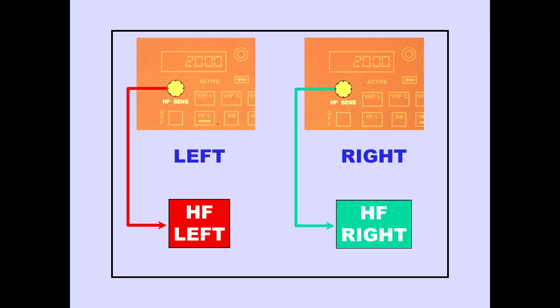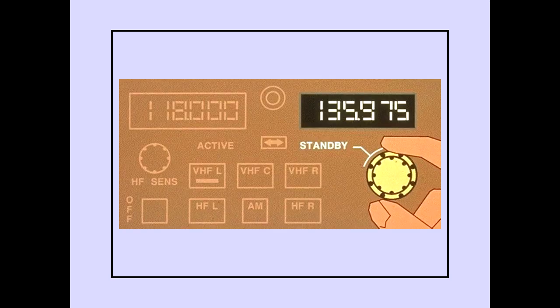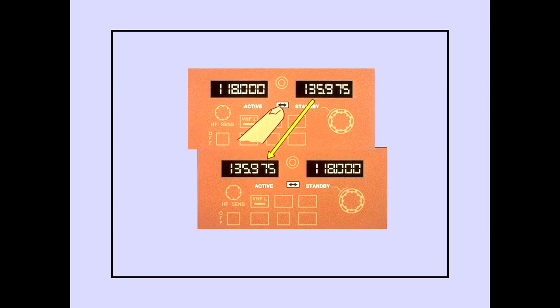The center radio tuning panel HF sensitivity control is inoperative because there is no center HF radio. The frequency selectors are used to select the VHF or HF frequency. Rotating the selector changes the standby frequency. Pushing the frequency transfer switch transfers the standby frequency to the active frequency and the active to the standby frequency.